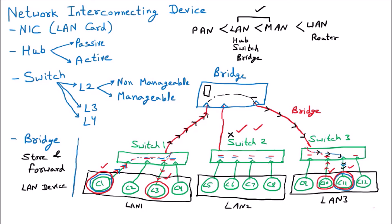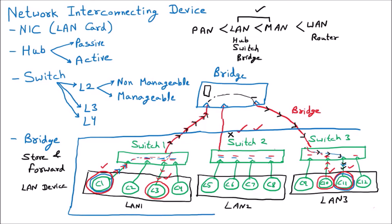We have learned that bridge is the LAN or MAN device used to connect multiple LANs. When multiple LANs are connected, they can become a MAN if the range crosses 10 kilometers. So all these LANs are connected and can form a metropolitan area network. However, if the bridge is placed in a small room with few switches not exceeding 10 kilometers, it is still a LAN example. This diagram can represent either a LAN or a MAN depending on the scale.